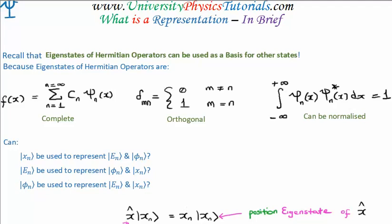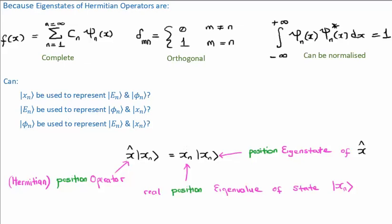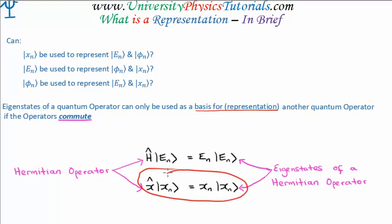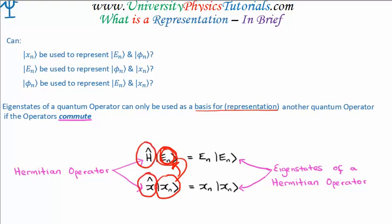In short, the answer is yes, with a caveat. Eigenstates of a quantum operator can only be used as a basis for representation of other quantum operators if the operators commute. We'll talk about what commutation means in a moment. So let's look at our energy eigenvalue equation and our position eigenvalue equation. The question I'm trying to ask is: can we use the position eigenstates to represent the energy eigenstates? And the answer is we can do that if and only if the operators — position and energy — commute.